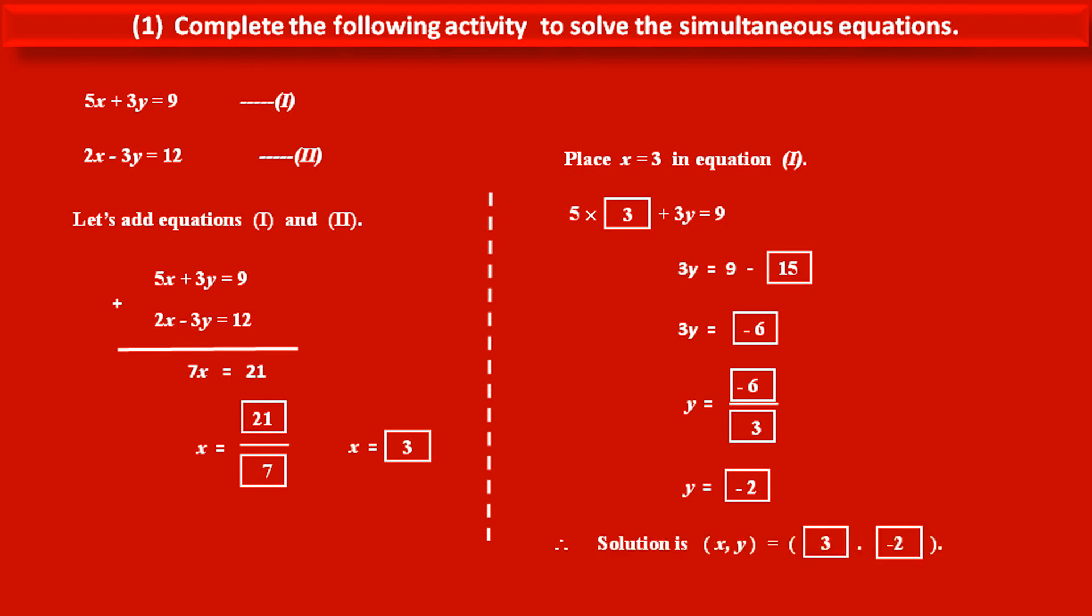Therefore, solution of this problem is (x, y), that is, value of x is 3 and value of y is minus 2. So this is the solution of given simultaneous equations.